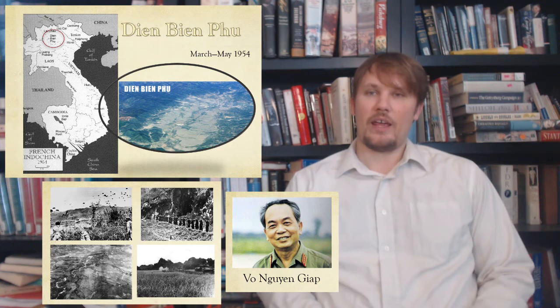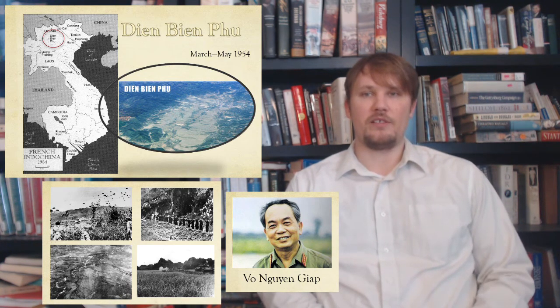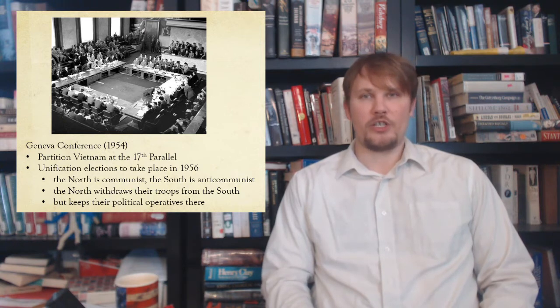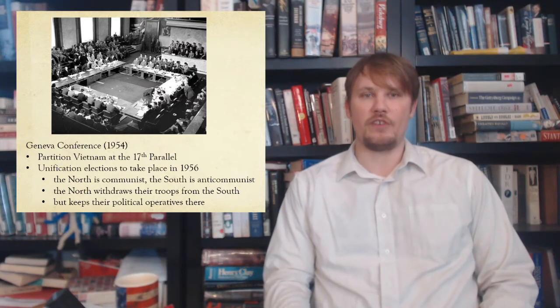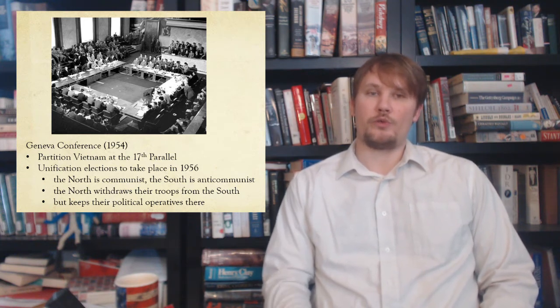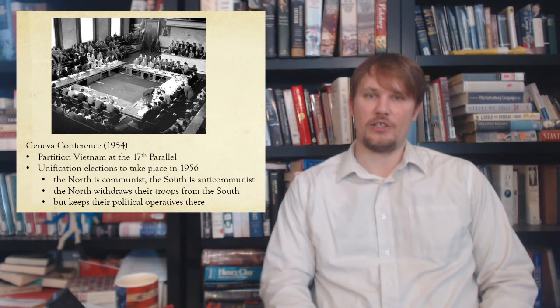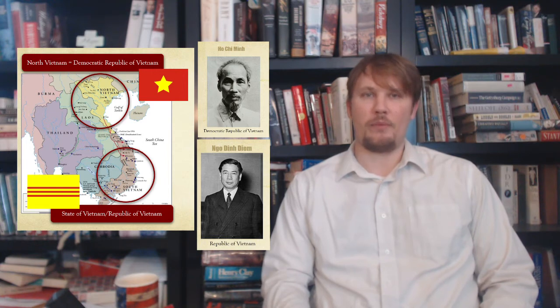The victory at Dien Bien Phu strengthened the Viet Minh's position at the Geneva Conference. At that conference, several things were decided: Vietnam would be partitioned at the 17th parallel, with unification elections to take place two years later in 1956. The North would be communist, the South anti-communist. The North would withdraw troops from the South but keep political operatives there to prepare for the 1956 elections. This created two countries: North Vietnam — the Democratic Republic of Vietnam — and South Vietnam — the Republic of Vietnam.